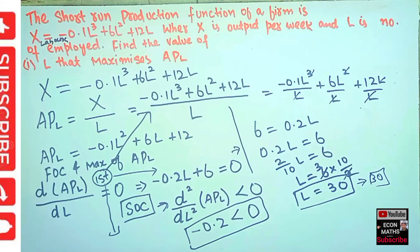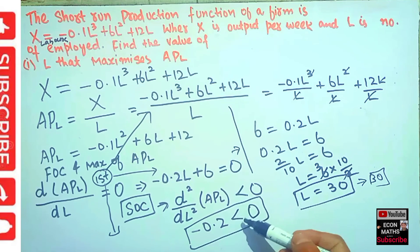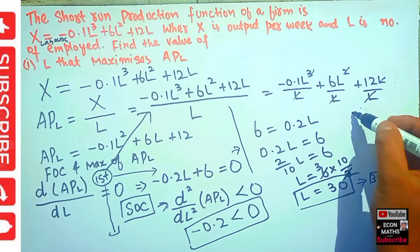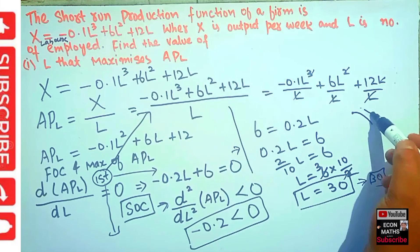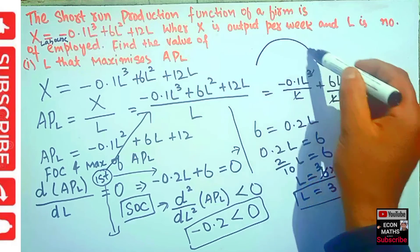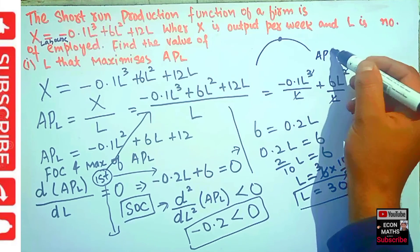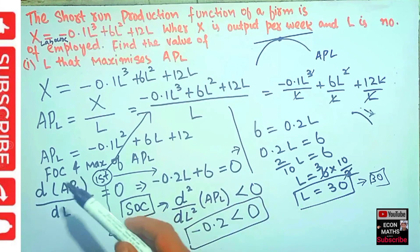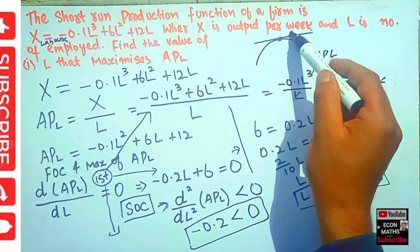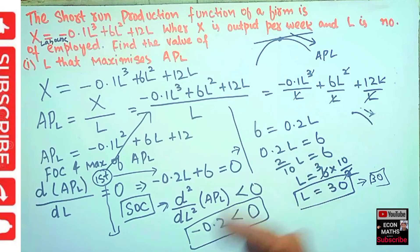Since minus 0.2 is less than zero, the second order condition for maximization is satisfied. This confirms that the number of labors that maximizes the average product of labor is equal to 30. The second derivative tells us the slope of the first derivative — since it is negative, we have a negative slope after reaching the maximum, confirming it is indeed a maximum. I hope this was clear. Thank you.